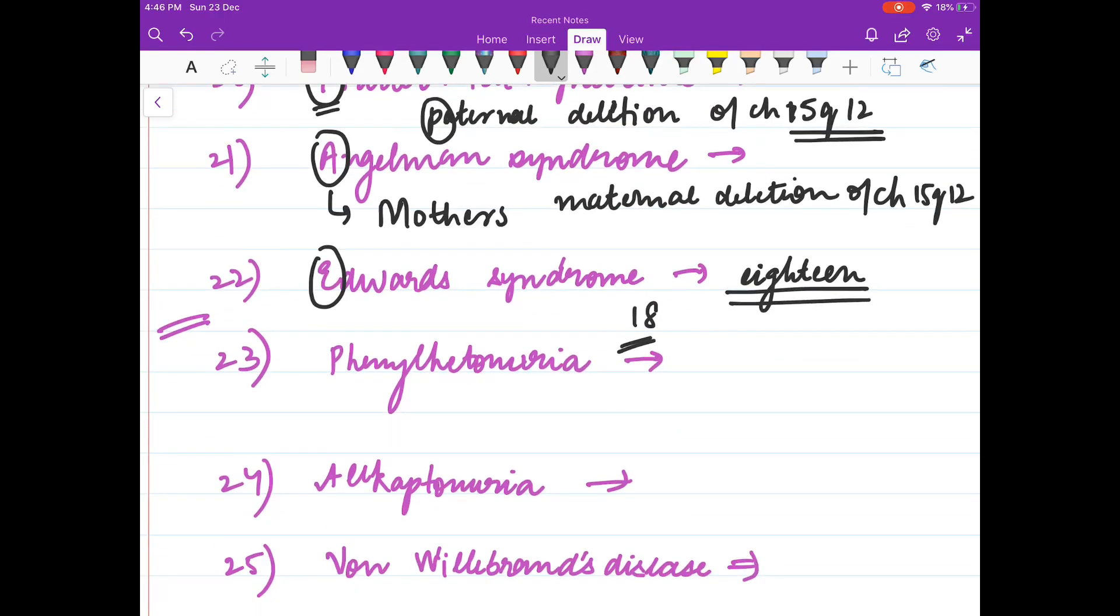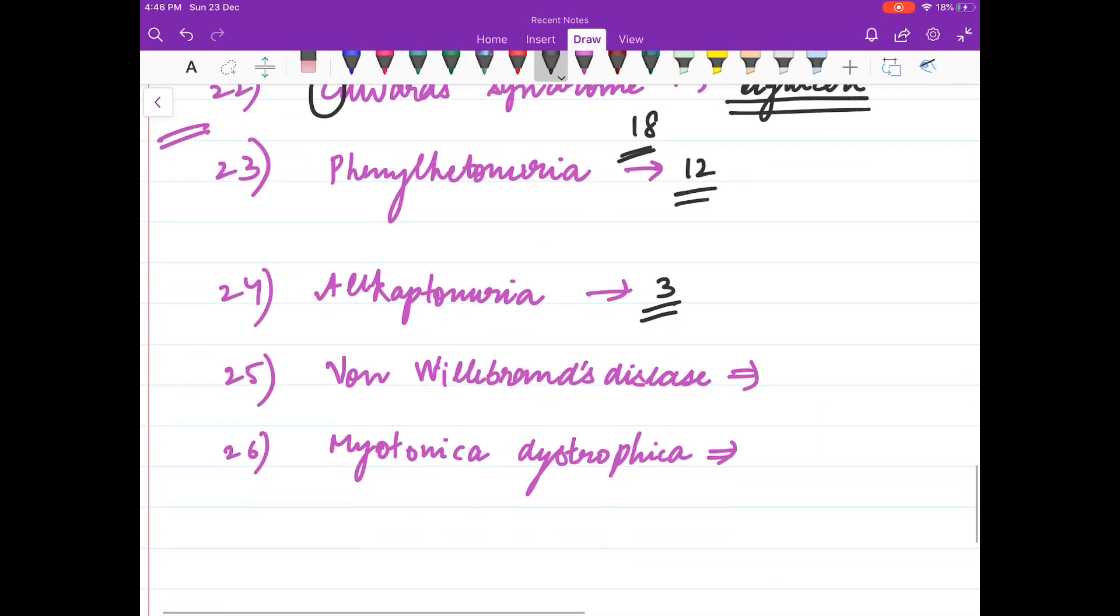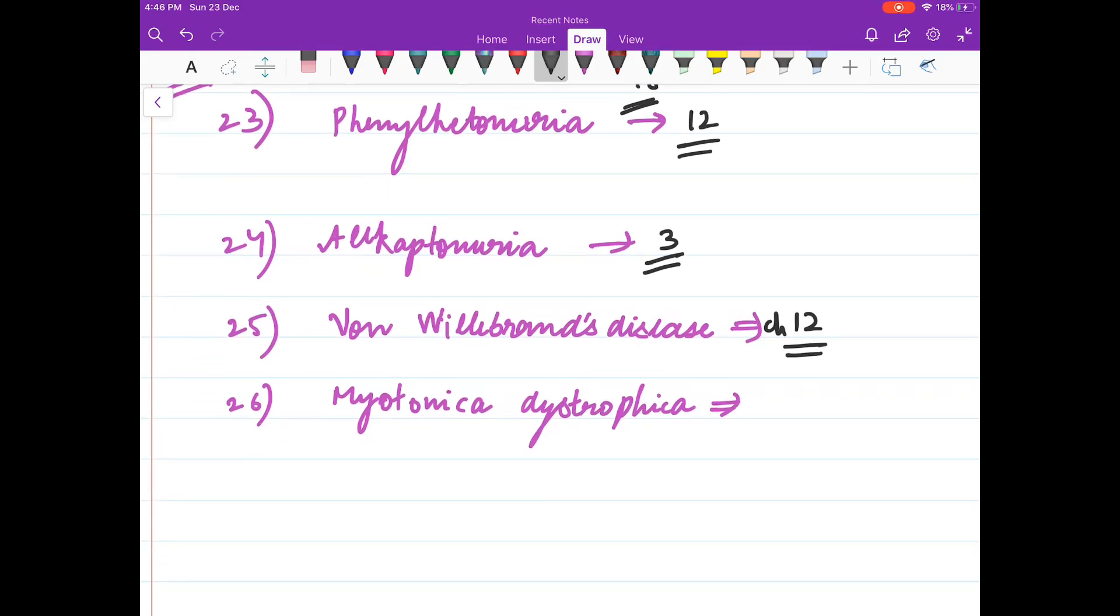Phenylketonuria, it is relatively unimportant, chromosome 12. Alkaptonuria, chromosome 3. Von Willebrand disease, chromosome 12. Myotonic dystrophy, chromosome 19. Thank you friends.